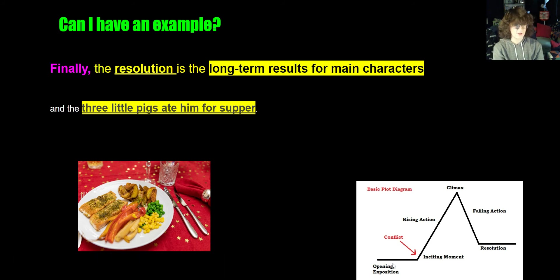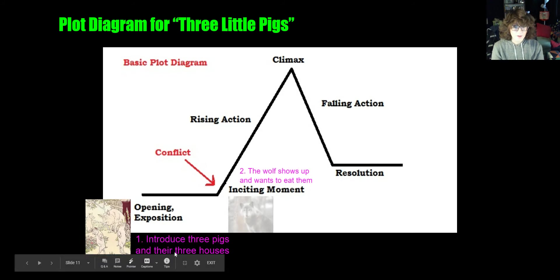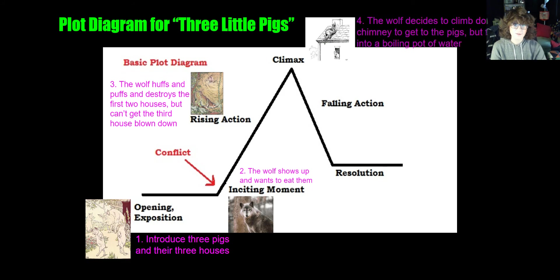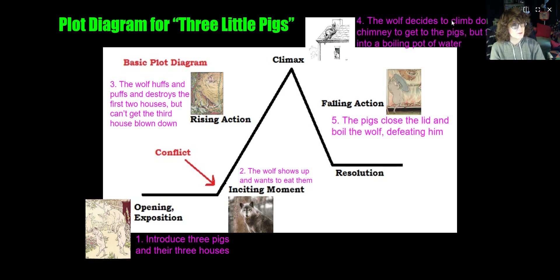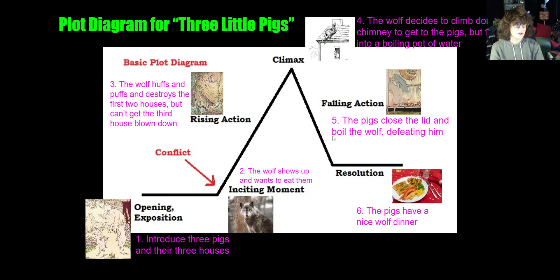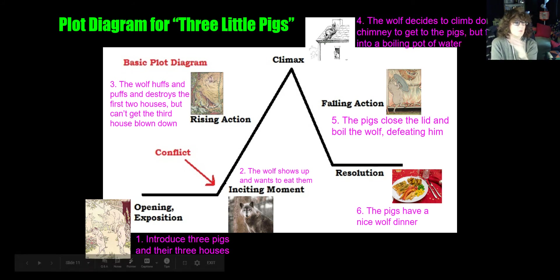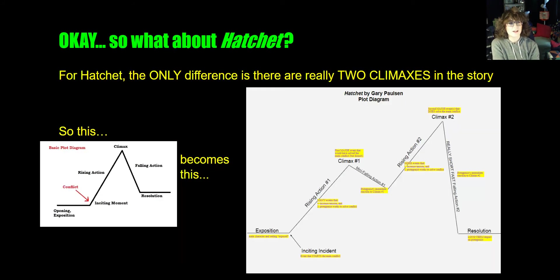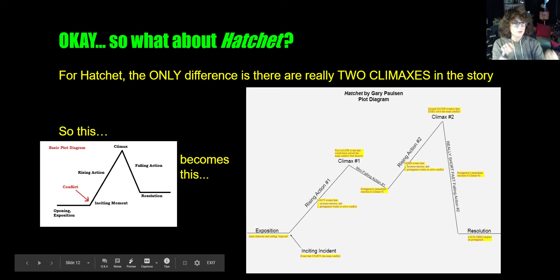So that is the entirety of our plot: first we meet the pigs and their three houses, then the wolf shows up — that's the beginning of the conflict. Next, rising action where the wolf huffs and puffs and destroys two of the houses. The climax is when the wolf jumps down the chimney and falls into the pot. The falling action is when the pig closes the lid and boils the wolf, defeating him. The resolution is the pigs having a nice wolf dinner. You can literally do this plot diagram with an episode of SpongeBob. Now we're going to do it for Hatchet. One big difference: Hatchet has two climaxes, so the basic single-mountain diagram turns into a double-peak mountain.